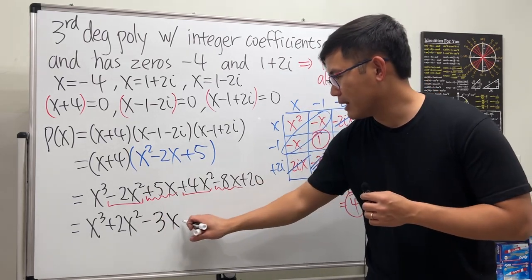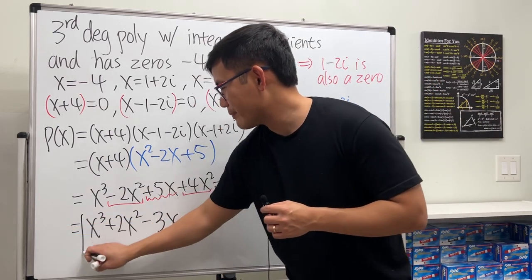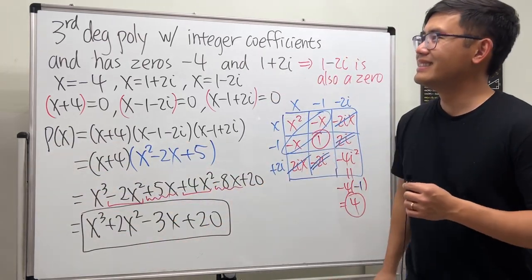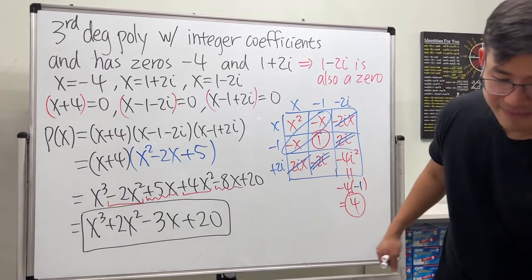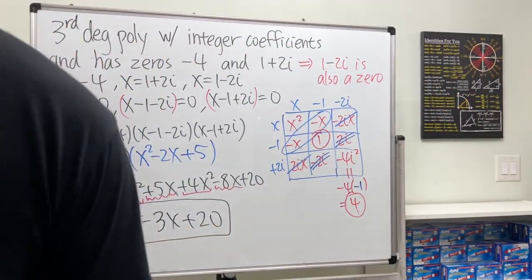And lastly +20. Oh my goodness, this is a pretty long question, but I'll box this for our answer. Our P(x) = x³ + 2x² - 3x + 20. This is it, you're done. You can do it too if you practice. Trust me, I trust you.